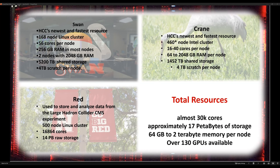SWAN is a 168-node Linux cluster with 56 cores per node, at least 256 gigabytes of memory per node, and two additional nodes with 2,048 gigabytes of memory. There are now about 20 GPUs in SWAN, 5.2 petabytes of shared storage, and four terabytes of scratch disk per node. In total, that brings to about 30,000 cores, 17 petabytes of storage, and about 130-140 GPUs available across all HCC resources.